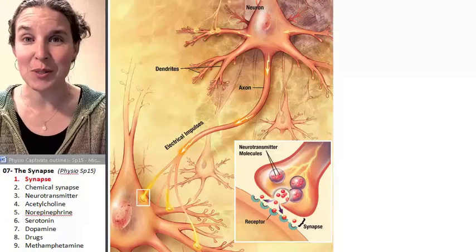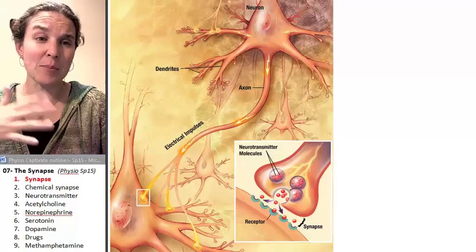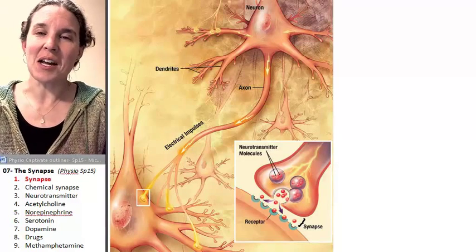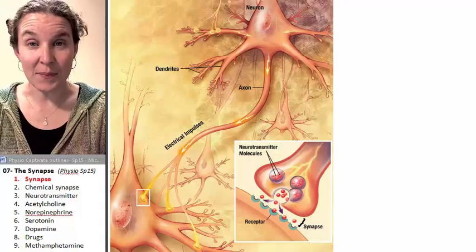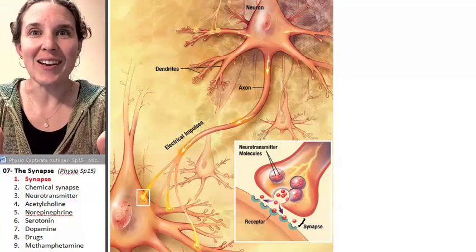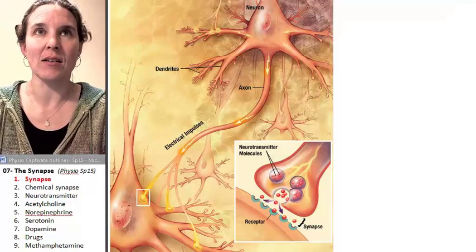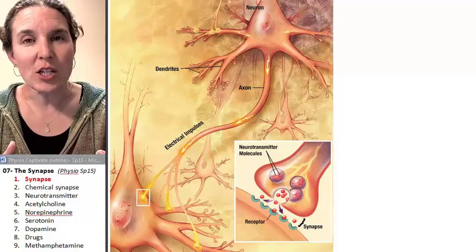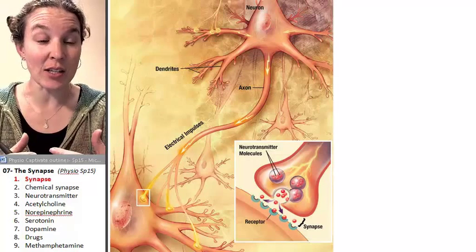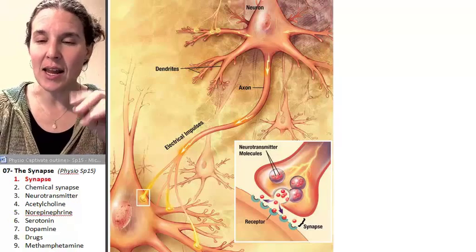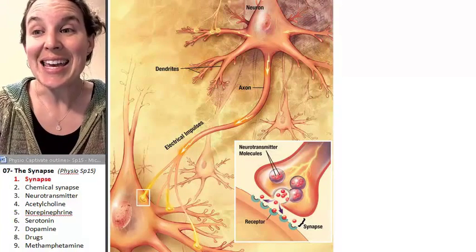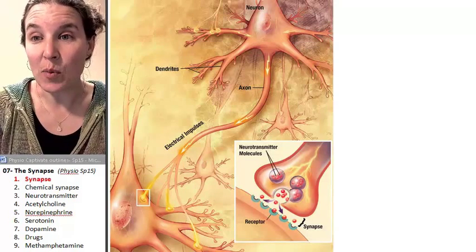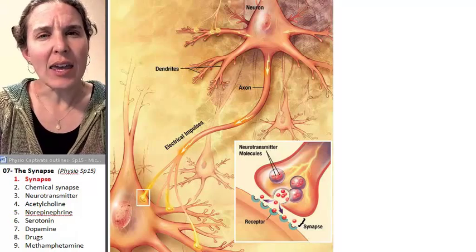So an action potential comes along, sodium ions and potassium ions move in and out — awesome. But then what happens when you get to the end of a neuron? What we reach at the end of a neuron, at the axon terminal, we usually reach a space, and we have to actually communicate information across that. I say we usually end up with a space — it is possible, and it does happen, that we end up with a gap junction.